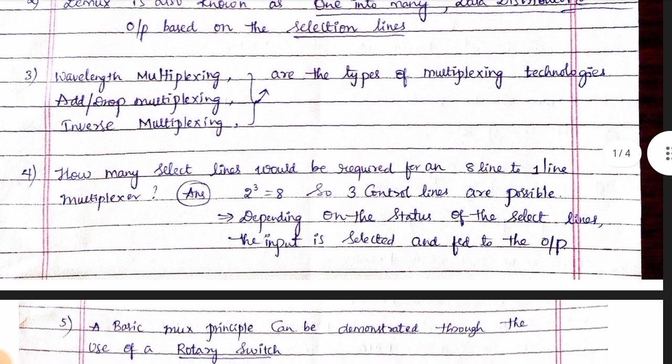Depending on the status of the selection lines, the input is selected and fed to the output. There are input lines, one output line, and 3 selection lines. In another case, 2 to the power of 4 equals 16, requiring 4 selection lines and 1 output.